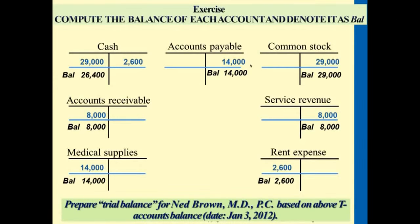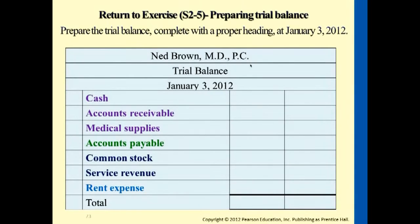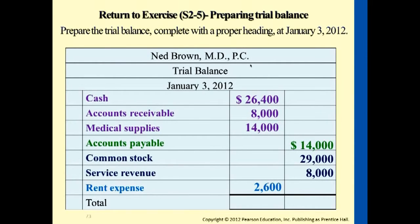Common stock goes under the credit side at $29,000. Service revenue is an equity account with a normal balance on the right side — also $8,000 on the credit side. Rent expense follows the opposite rule compared to revenues, so it goes under the debit side. Adding up the left side and the right side gives you $51,000 on both the debit and credit columns.